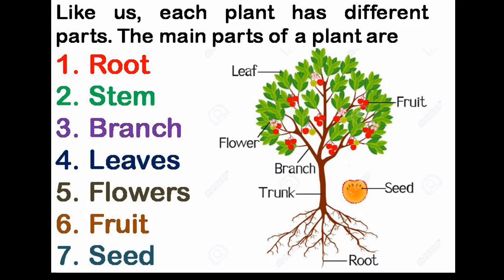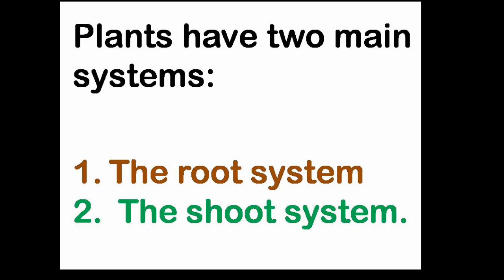Like us, each plant has different parts. The main parts of a plant are root, stem, branch, leaves, flowers, fruit, and seed. Plants have two main systems: first the root system, and second the shoot system.